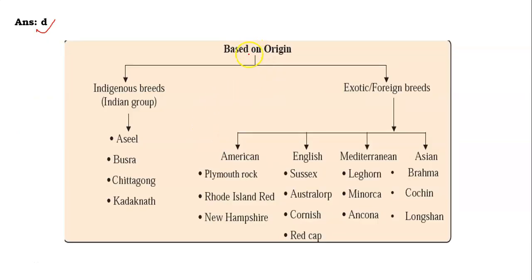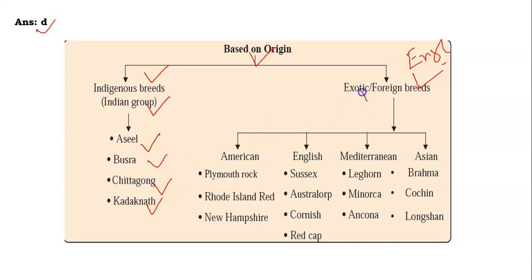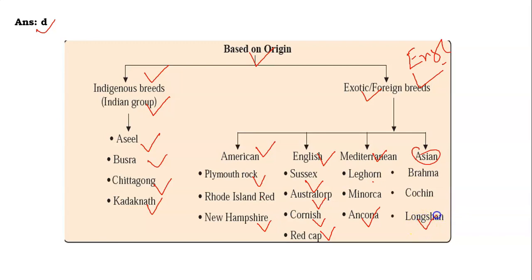Here is a chart. On the basis of origin, chickens can be divided into two groups: the first is the indigenous breed, called the Indian group, and the second is the exotic or foreign breed, also known as the English breed or foreign breed. Under the Indian group: Asil, Busra, Chittagong, and Kadaknath are Indian breeds. Under exotic breeds — American: Plymouth Rock, Rhode Island Red, New Hampshire. Under English: Sussex, Australorp, Cornish, or Red Cap. Under Mediterranean: Leghorn, Minorca, Ancona. Under Asian: Brahma, Cochin, or Langshan. You can remember these types of breeds by pausing this video. The answer for this question is Sussex, that is D.